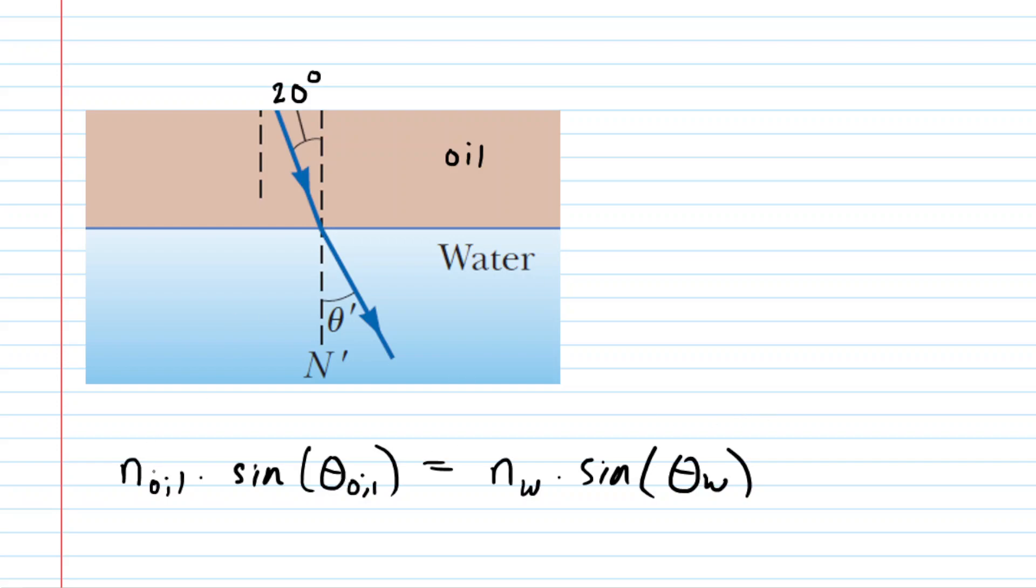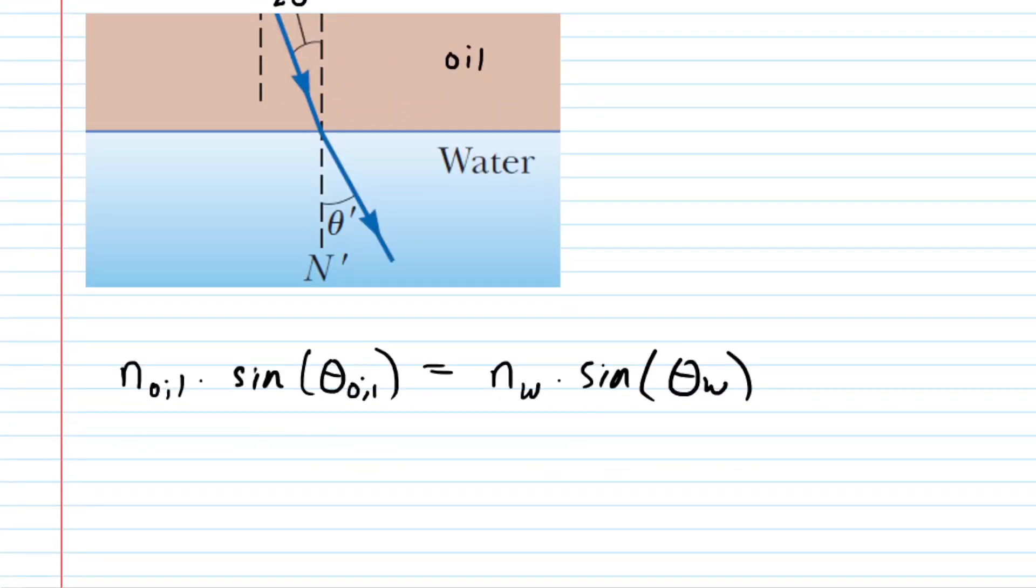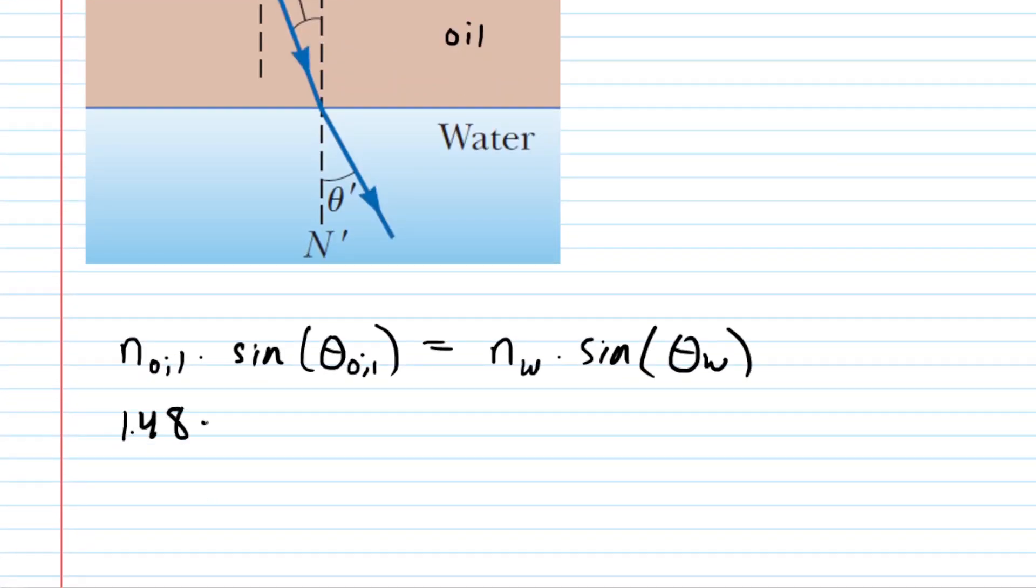We'll go ahead and plug in the values. Again, we know the index of refraction for oil is the 1.48. The incident angle at the oil side of the interface was labeled in the diagram as 20 degrees. And then the index of refraction for water can be looked up in a table that's present in this chapter. It turns out to be 1.333. We'll pick up our calculators and we will punch in the left side. And when we do so, we get about 0.5062.